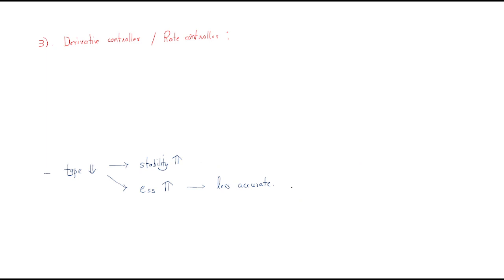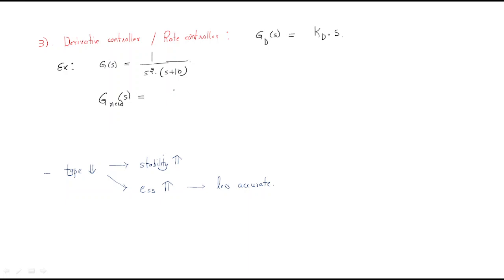Next is the derivative controller. The derivative controller transfer function GC(s) has gain KD·s. Using the same example approach, consider a system G(s) = s²/(s+10). By applying the derivative controller KD·s, the new system becomes KD·s²/(s·(s+10)), which simplifies to KD/(s+10), giving a characteristic equation s² + 10s + KD.